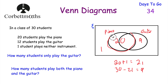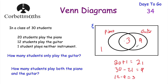Now let's find how many play both. We know 12 play guitar total, and 9 only play guitar, so 12 minus 9 equals 3 — there are 3 students who play both. Since 20 play piano total and 3 play both, there must be 17 who only play piano. Check: 17 plus 3 plus 9 plus 1 equals 30. So 9 students only play the guitar and 3 students play both piano and guitar.